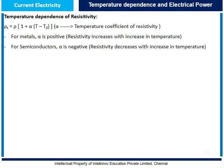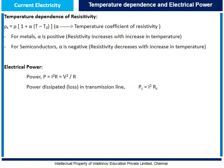Now let us understand electrical power. The power required in an electrical circuit is given by P equal to I squared R. This can also be written as V squared by R. Power dissipated in a transmission line is given by Pc equal to I squared Rc, or Pc equal to P squared Rc by V squared. Thus, power loss in transmission is inversely proportional to V squared — if the voltage in a transmission line is high, the power loss will be less.